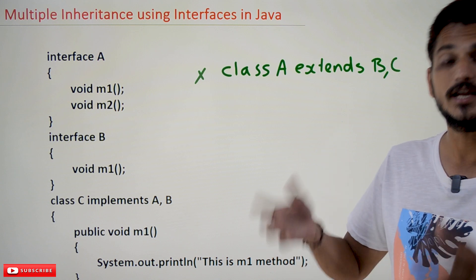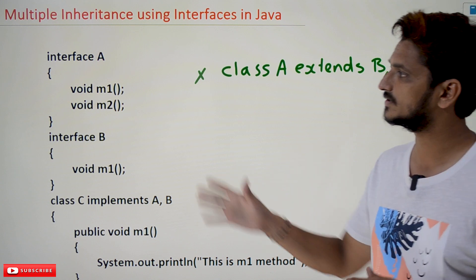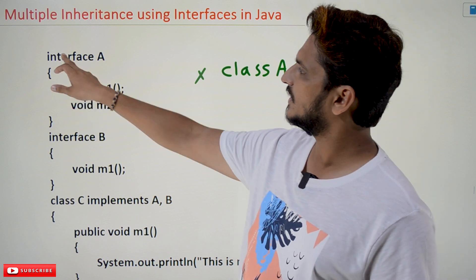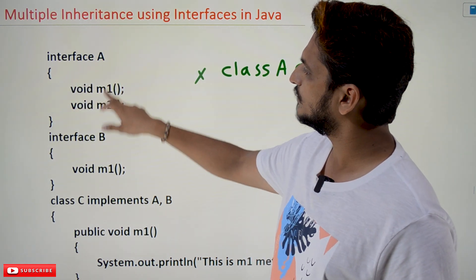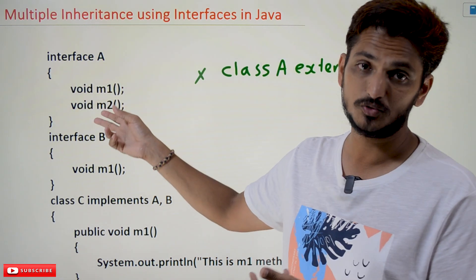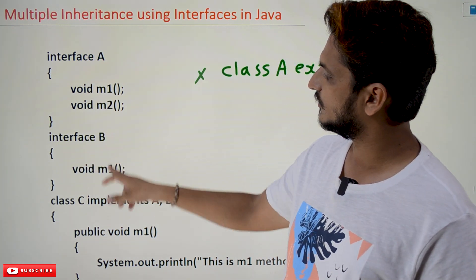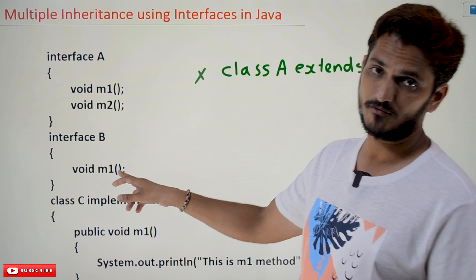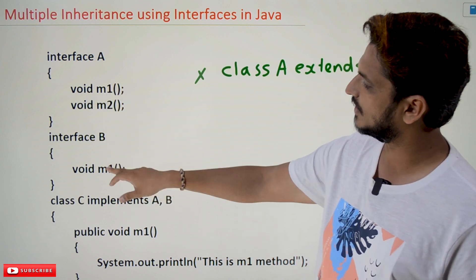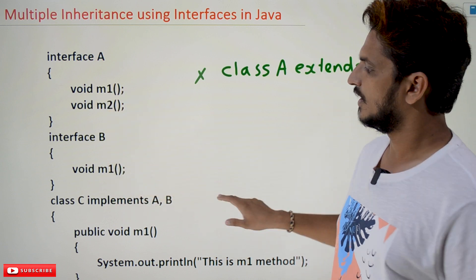Why is it allowed with interfaces? Let's understand with an example. Take interface A with two methods: m1() and m2(). These are abstract methods. We have another interface B with one method m1(). Note that both interfaces have method m1().